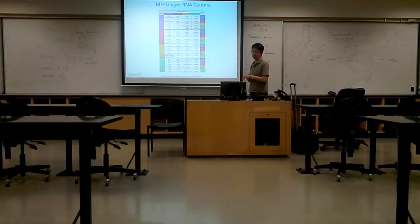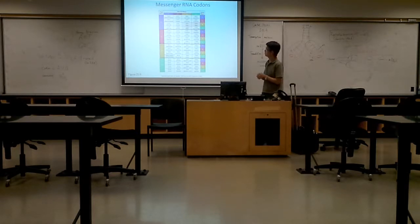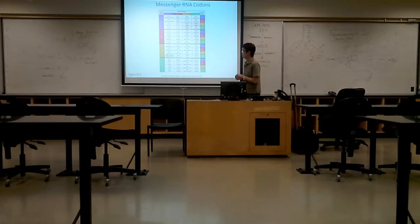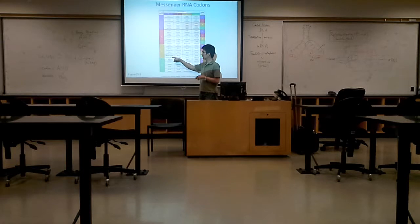So this is the table. The good news for you is that you do not need to memorize the entire table — I repeat, you do not need to memorize the entire table. Let me point out several things. As you can see here, AUG translates into methionine, and it is a start codon.